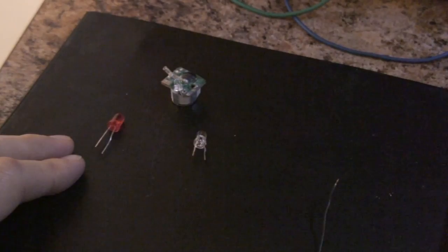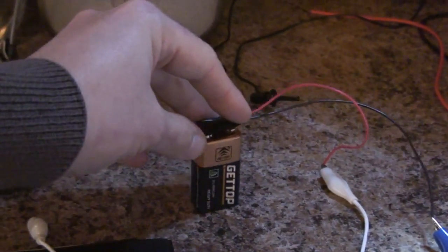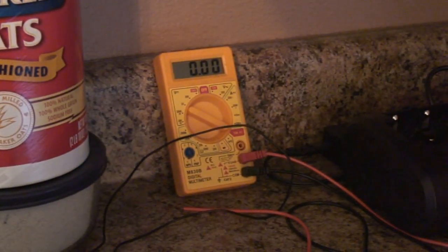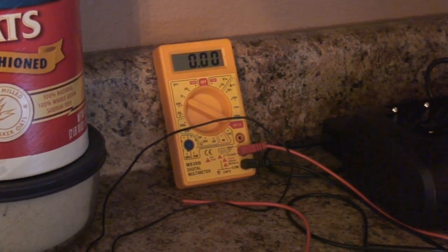Basically all you have to do to find the forward voltage is use a small battery, in this case I'm going to use a 9 volt battery, and you'll need a multimeter to simply measure the voltage across the LED.